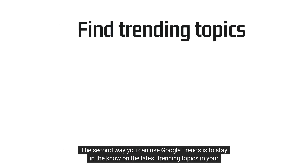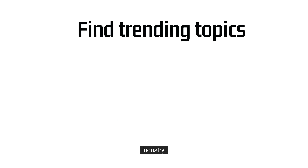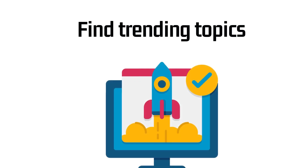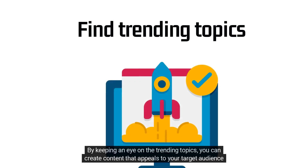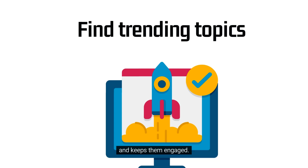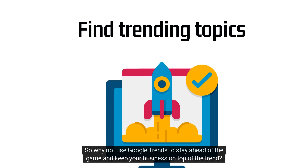The second way you can use Google Trends is to stay in the know on the latest trending topics in your industry. It's like a radar for what's hot right now. By keeping an eye on the trending topics, you can create content that appeals to your target audience and keeps them engaged. So why not use Google Trends to stay ahead of the game and keep your business on top of the trend?